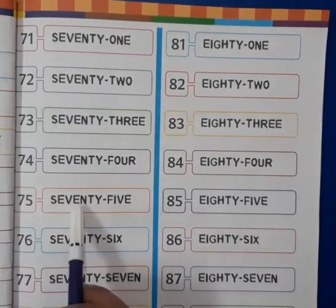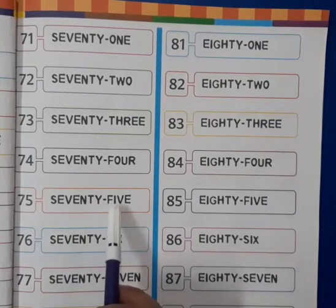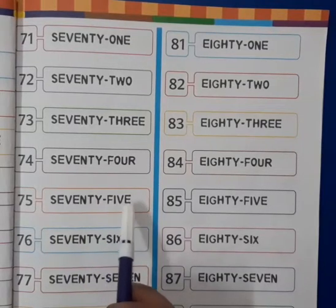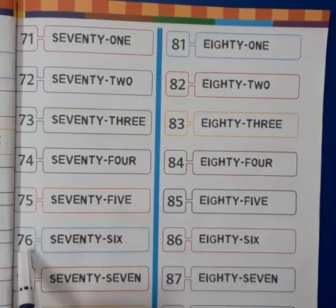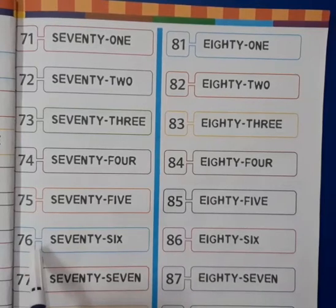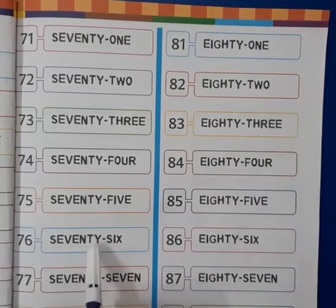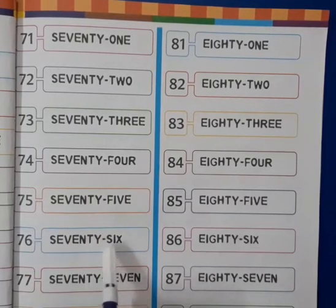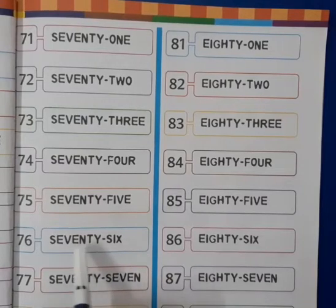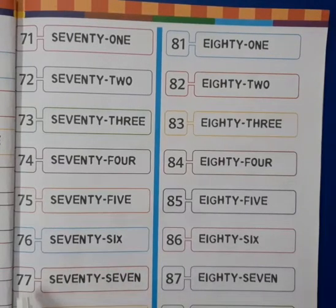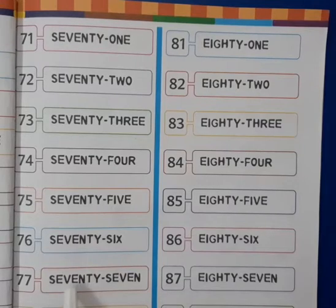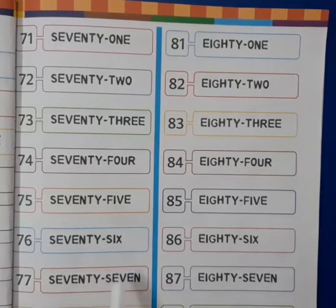Now this is 75. S-E-V-E-N-T-Y, F-I-V-E, 75. This is 76. S-E-V-E-N-T-Y, S-I-X, 76. This is 77. S-E-V-E-N-T-Y, S-E-V-E-N, 77.